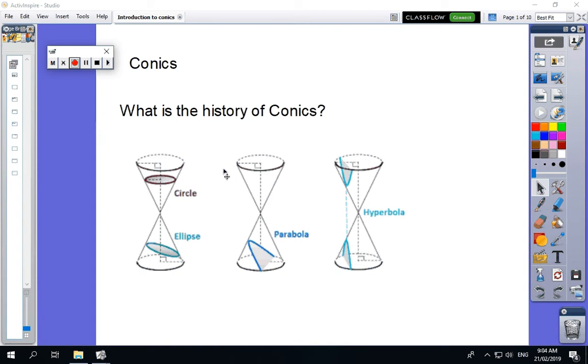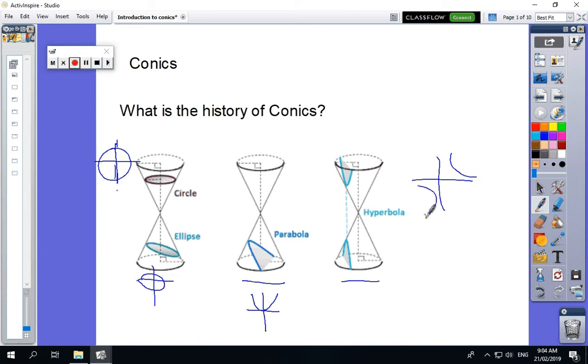They're called conic sections because they are the cross sections resulting when a cone is cut. So here we can see there's a circle, here we have the parabola, and here we have the hyperbola. So we just remind ourselves of the shapes. So a circle obviously is like this, when we're talking about an ellipse, an ellipse is like a circle but like a more squished circle. Our parabola and our hyperbola, so most of these you'll be familiar with.